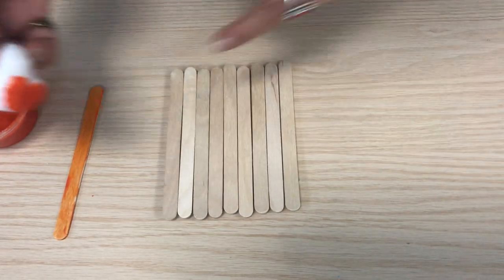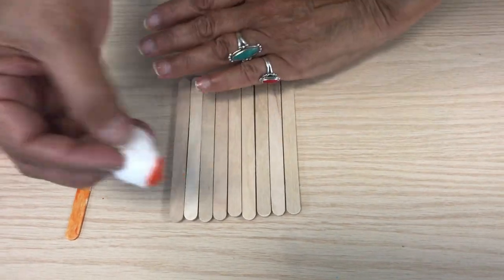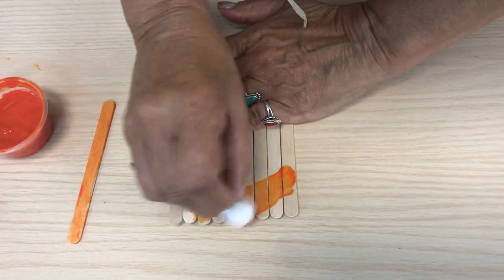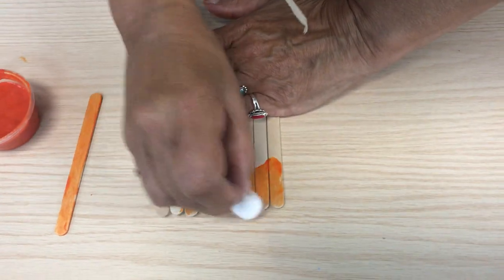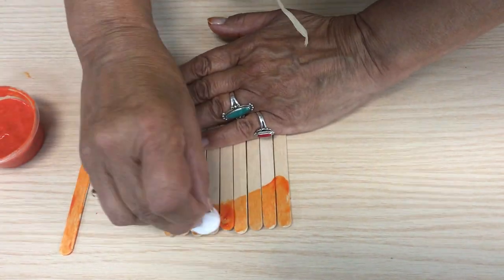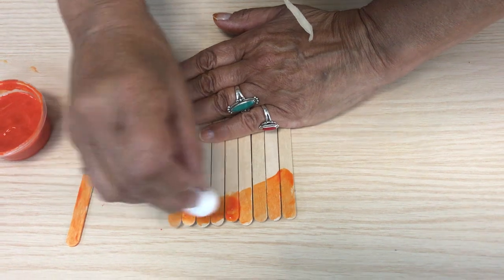Let that dry. And then you continue. You're going to paint your sticks in an angle. And you can give this a couple of coats depending on how dark you want this to be.